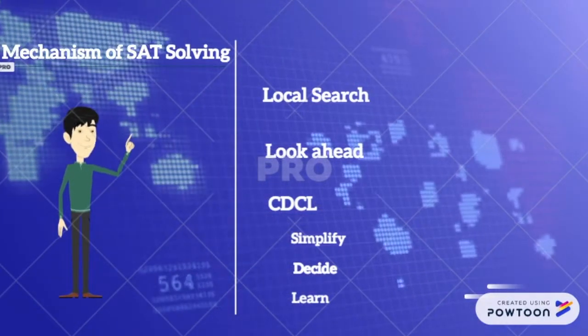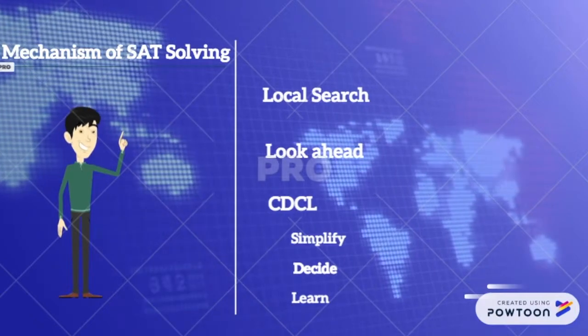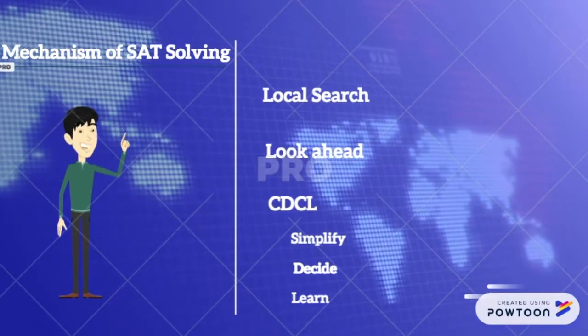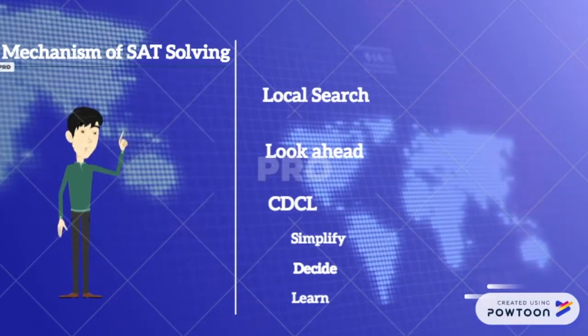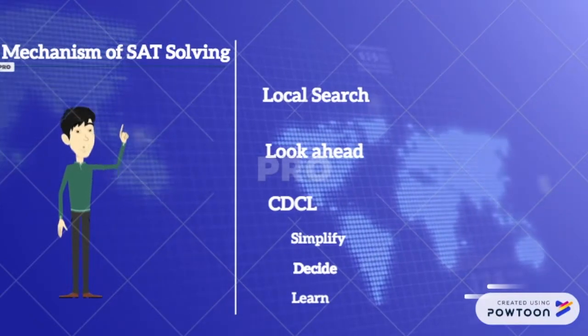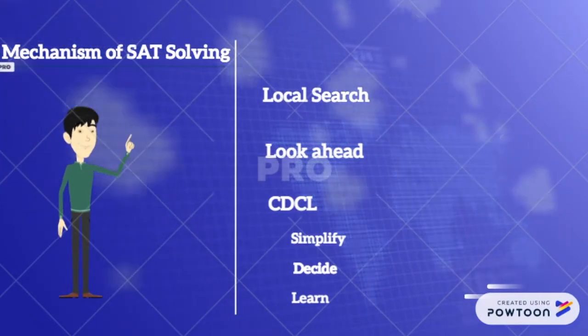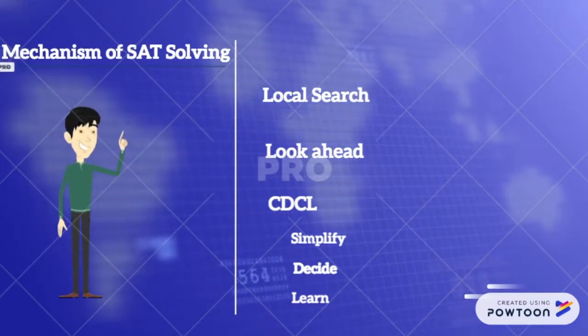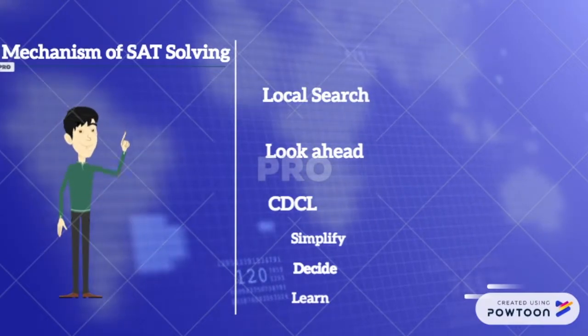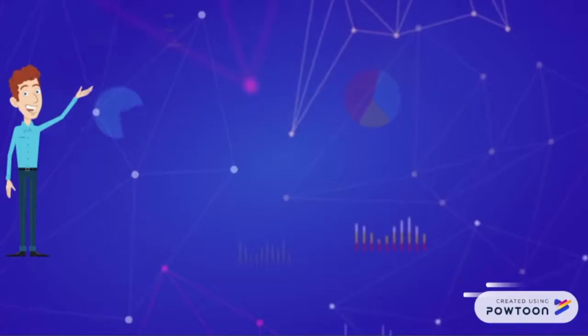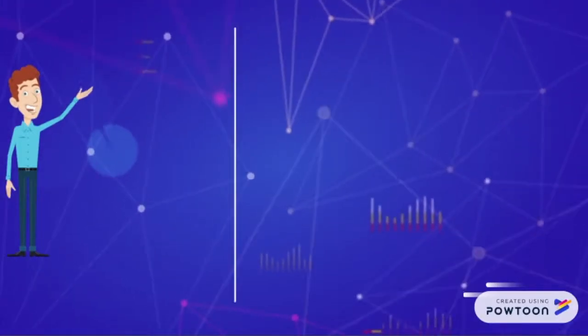The learn phase learns the conflicts or unsatisfiability as a clause and modifies the assignment to resolve the conflict. If the empty clause is derived, the solver detects unsatisfiability; otherwise, simplify and decide are performed repeatedly.